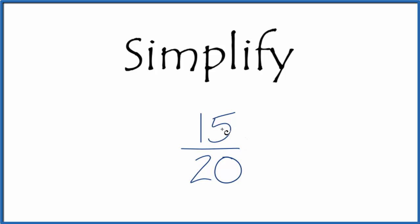I can see that 15 and 20, the greatest common factor for that looks like it's going to be 5. 5 goes into 15 evenly and 5 goes into 20 evenly.